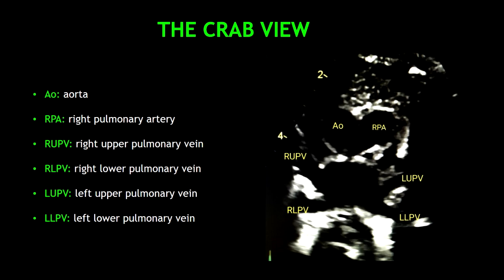In this image you can see all the structures visualized in this view. On the left side from top to bottom we have the aorta, the right upper pulmonary vein and the right lower pulmonary vein. On the right side from top to bottom we have the right pulmonary artery, the left upper pulmonary vein and the left lower pulmonary vein.